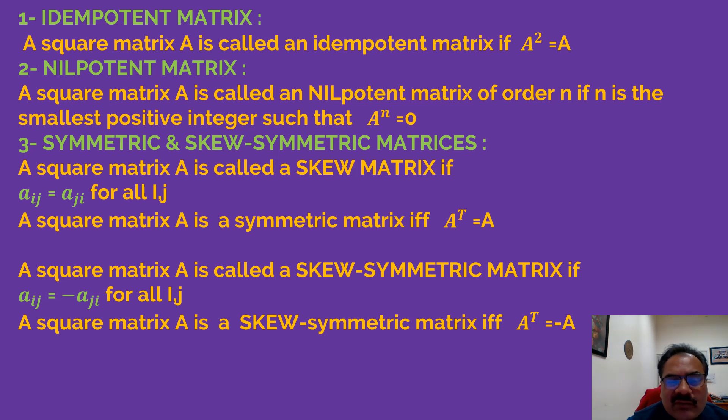The square matrix A is called an idempotent matrix if A² = A. This is a very special matrix and the properties of matrices you can see if you multiply A into A and you are getting A². If that is equal to A, then this is called idempotent matrix.